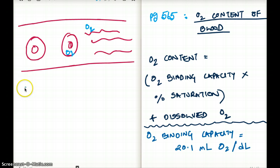So when we measure oxygen content, we take both of them into account. We take oxygen bound to hemoglobin plus oxygen dissolved in plasma. We take both into account.